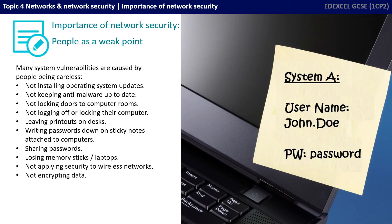Many system vulnerabilities are caused simply by people being careless. We refer to these as people being the weak point in the system. Here are some simple examples: people not installing operating system updates, not keeping anti-malware software up to date, not locking doors to computer rooms or not logging off, leaving printouts of sensitive information on desks, writing passwords down on sticky notes and attaching them to computers, sharing passwords with colleagues, losing memory sticks and laptops, not applying security to wireless networks, and not encrypting data.